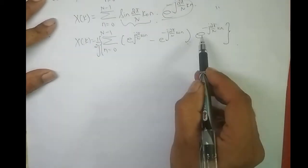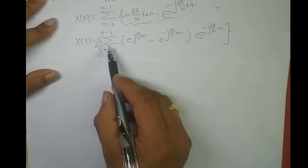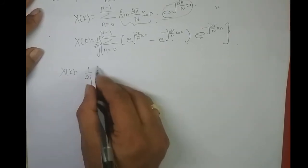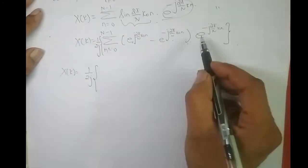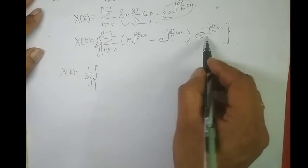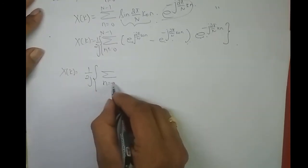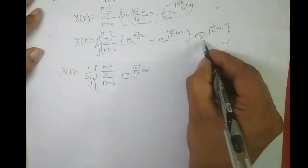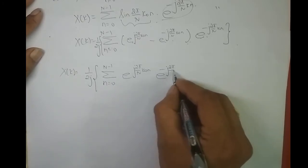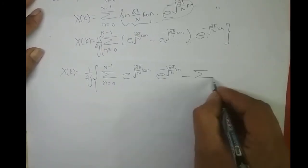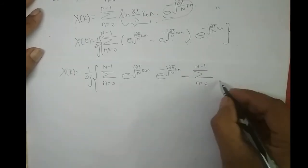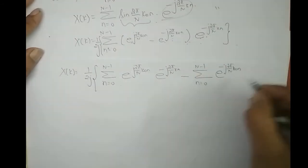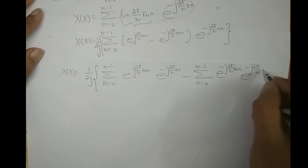I will multiply this exponential to each term. So X(k) = (1/2j) · [summation n from 0 to N−1 of e^(j2π/N · k₀n) · e^(−j2π/N · kn) − summation n from 0 to N−1 of e^(−j2π/N · k₀n) · e^(−j2π/N · kn)].